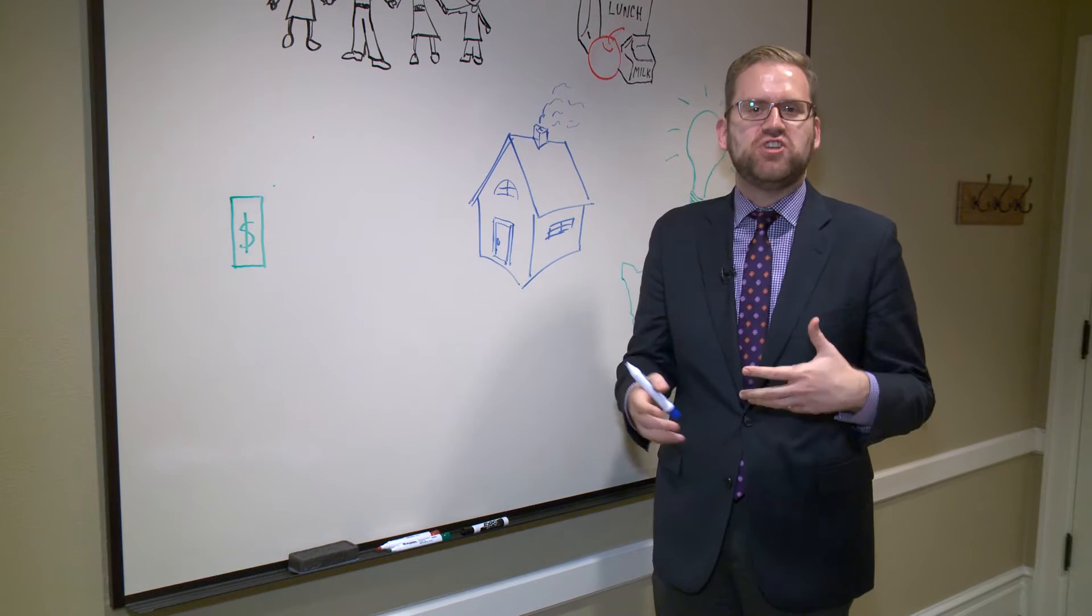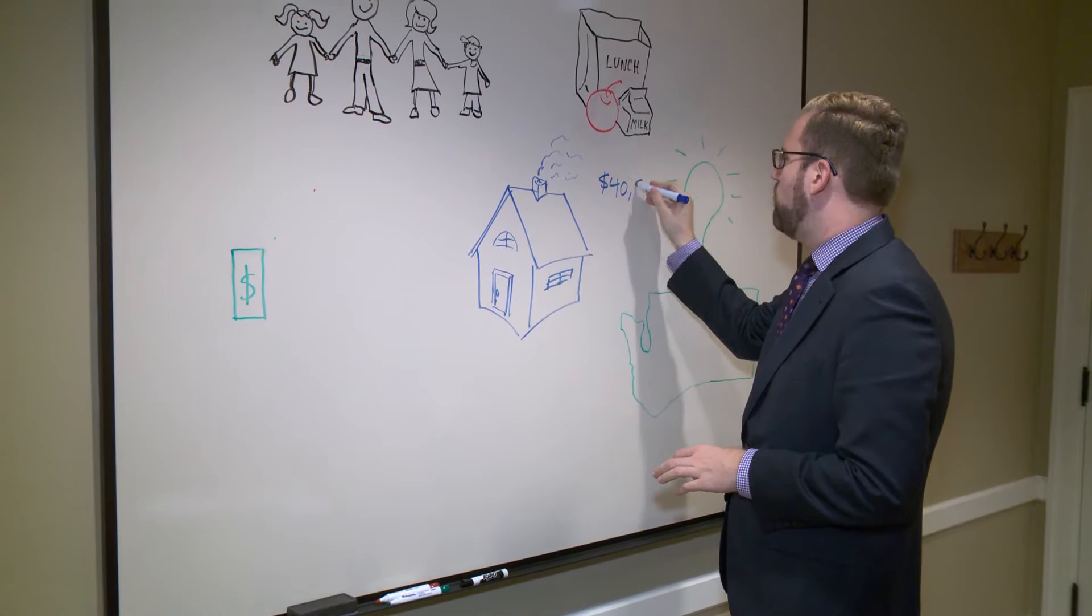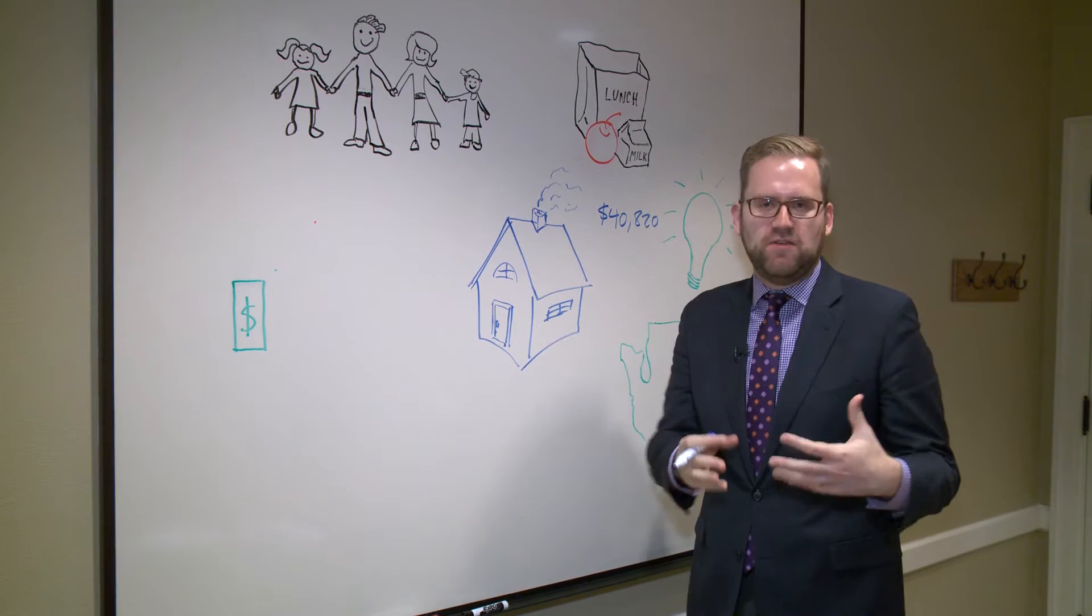So today I want to go a little bit more in depth about the challenges that our low pay poses for our teachers here in Washington State. For a new teacher in Washington State with a master's degree, the average salary across the state is about $41,000.